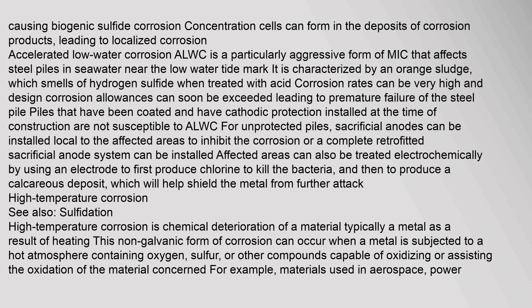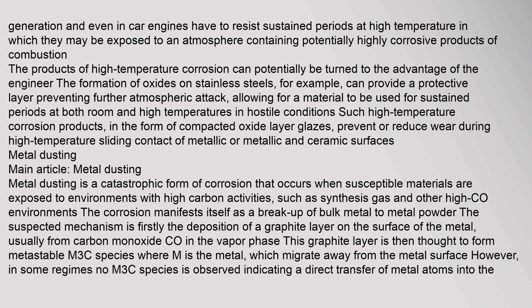High temperature corrosion. High temperature corrosion is chemical deterioration of a material — typically a metal — as a result of heating. This non-galvanic form of corrosion can occur when a metal is subjected to a hot atmosphere containing oxygen, sulfur, or other compounds capable of oxidizing the material. For example, materials used in aerospace, power generation, and car engines have to resist sustained periods at high temperature, where they may be exposed to an atmosphere containing potentially highly corrosive products of combustion. The formation of oxides on stainless steels, for example, can provide a protective layer preventing further atmospheric attack, allowing a material to be used for sustained periods at both room and high temperatures. In hostile conditions, high-temperature corrosion products in the form of compacted oxide layer glazes can prevent or reduce wear during high-temperature sliding contact of metallic or ceramic surfaces.